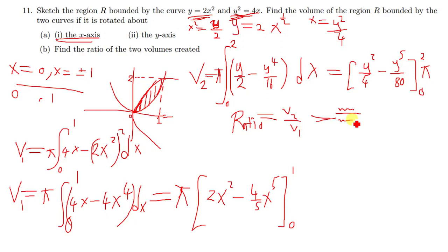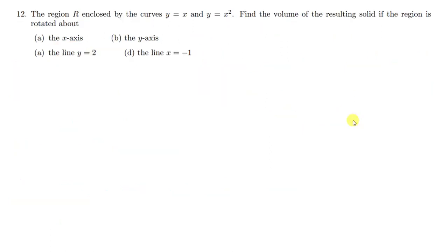Let's move on to the last question, which is almost the same as what we just did. The region is enclosed by the curves y equals x and y equals x squared. We need to find the volume of the resulting solid when this region is rotated about the x-axis, the y-axis, the line y equals 2, and the line x equals 2.